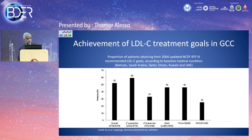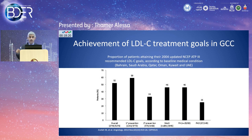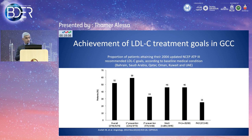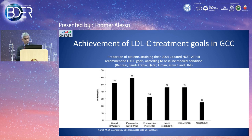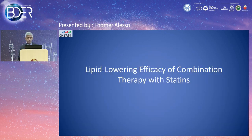Gulf data from the CEPHEUS trial, published in 2014, showed similar findings. Using older NCEP ATP III targets from 2004 — which had looser LDL thresholds — only 52% of the overall group were reaching their LDL goal. Looking at secondary prevention specifically, only 33% were reaching their LDL goal, highlighting the inadequacy of lipid-lowering therapy efficacy in the region.